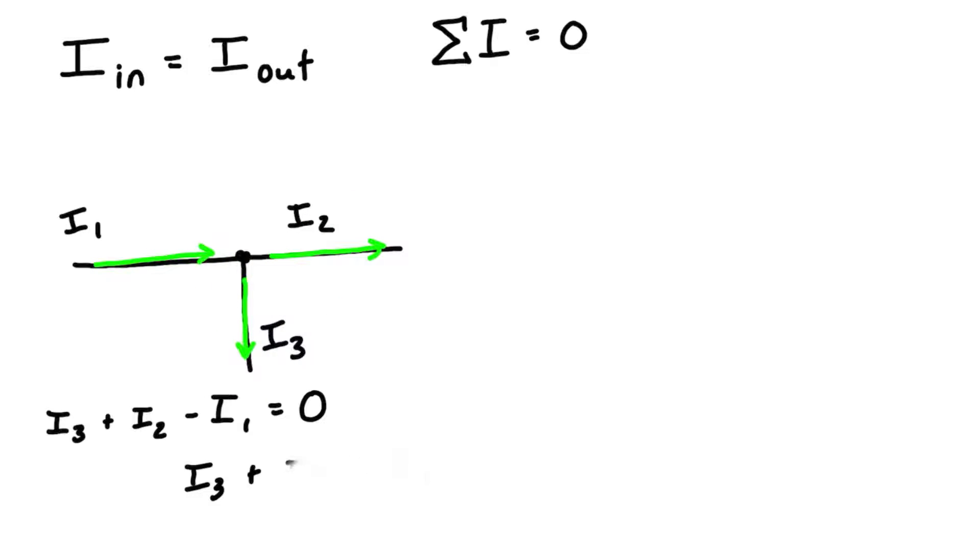Let's give some of these some values. Let's say that i1 is equal to 9.75 amps, and let's say that we know i3 is 4.5 amps. Then the question would be: what is i2? Well, we can just fill in the values that we have. We know that i3 is 4.5 amps...